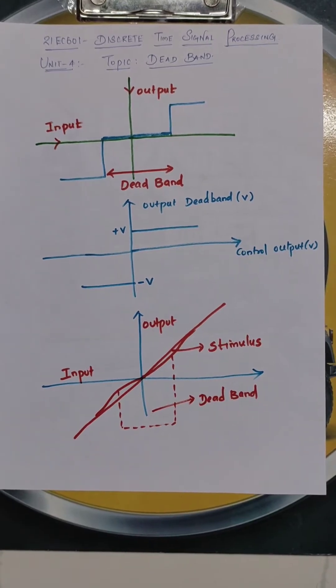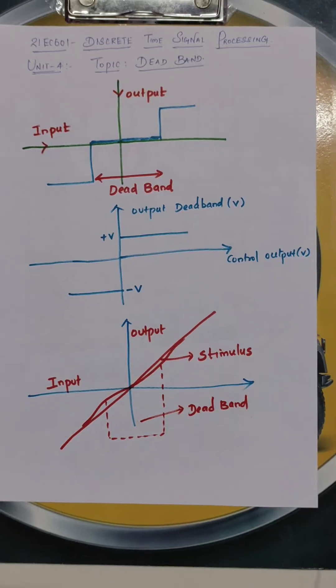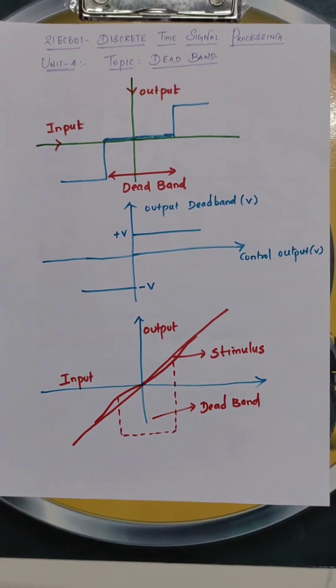So currently, I am taking this subject for the present third year students. I am going to deal with unit number four, finite word length effects.